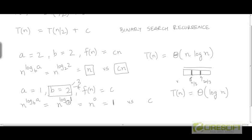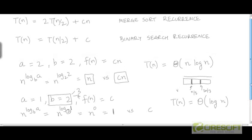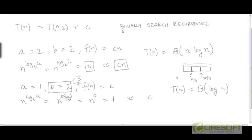Because a remains 1 — since we are ultimately recursing into one sub-array in binary search — it doesn't matter what the base b is. The power of n here would be 0, because for any b greater than 1, b^0 = 1. So n^(log_b 1) = 1 irrespective of whether b is 2, 3, 4, or 5, as long as it is some constant.